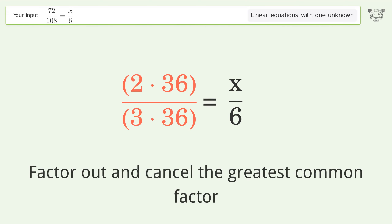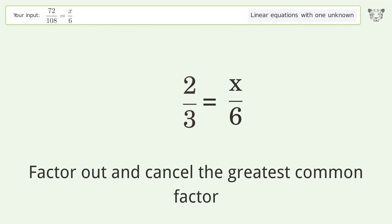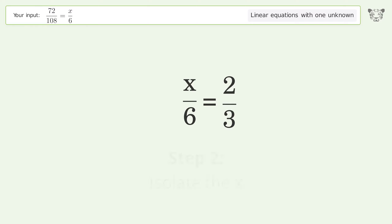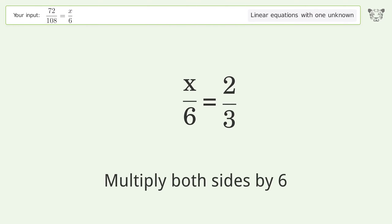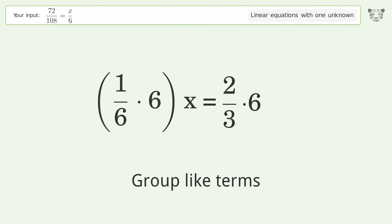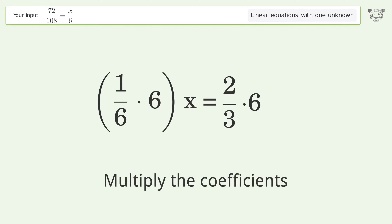Cancel the greatest common factor, swap sides, isolate the x, and multiply both sides by 6. Then group like terms and multiply the coefficients.